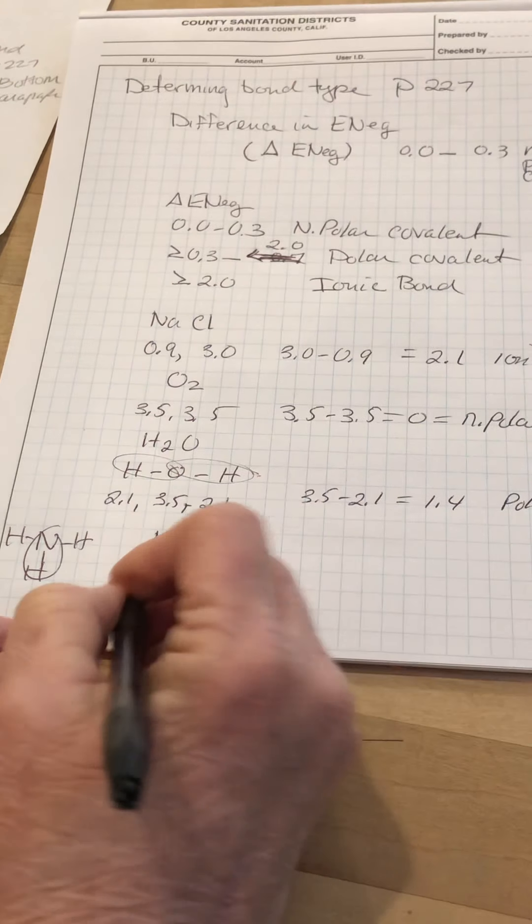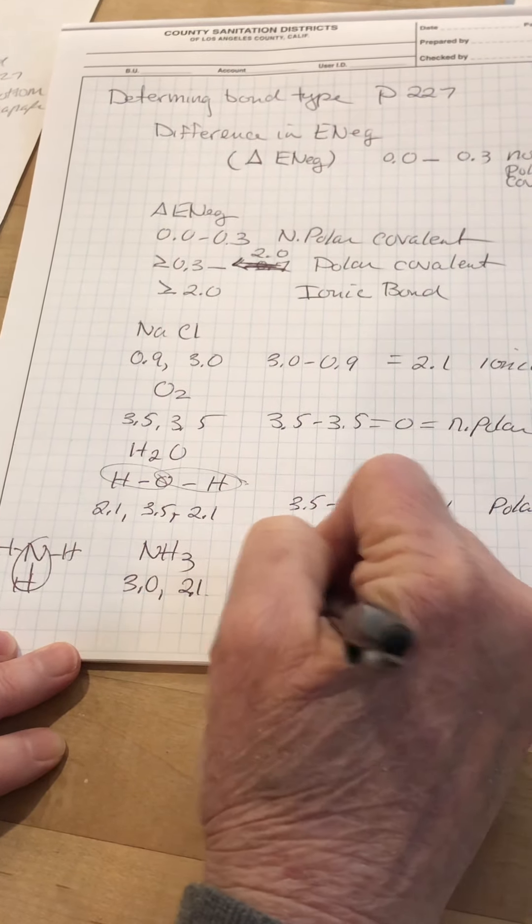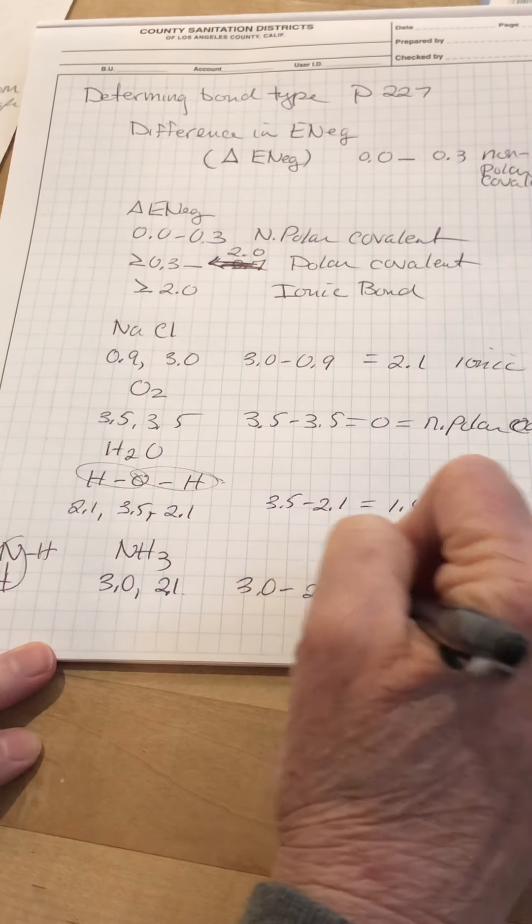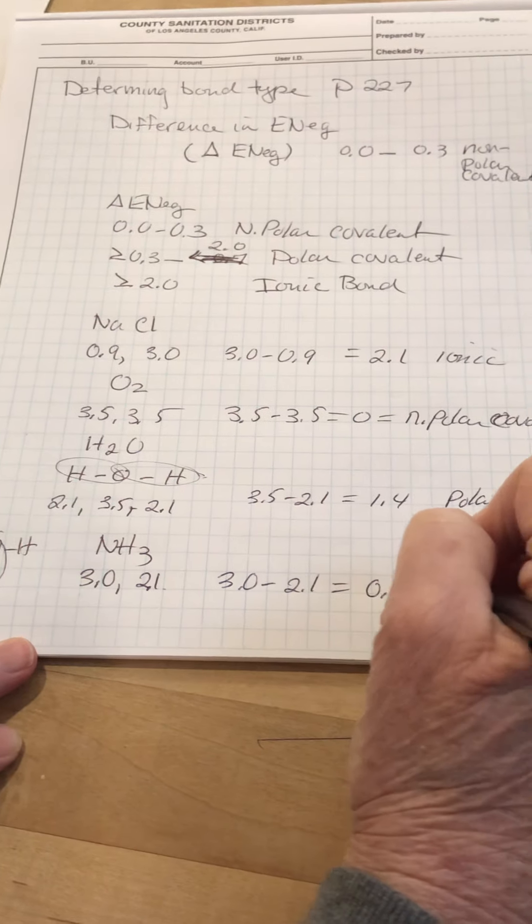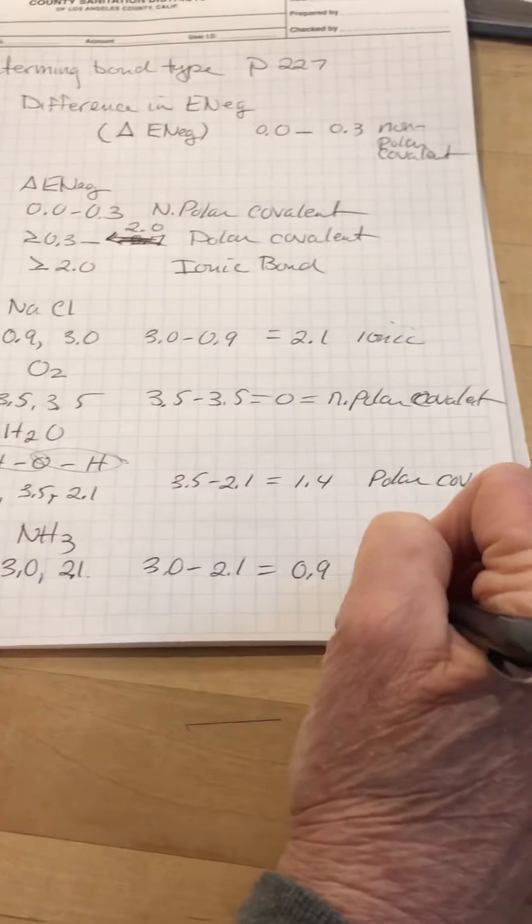I subtract those, 3.0 minus 2.1 gives you 0.9, and the bond is polar covalent.